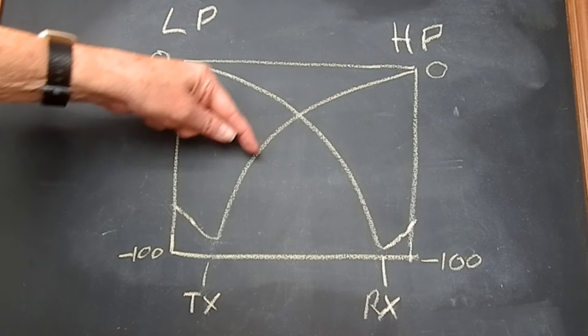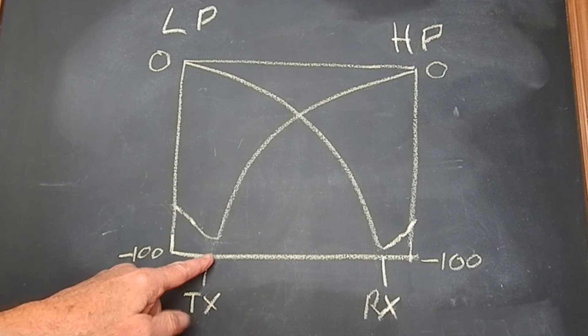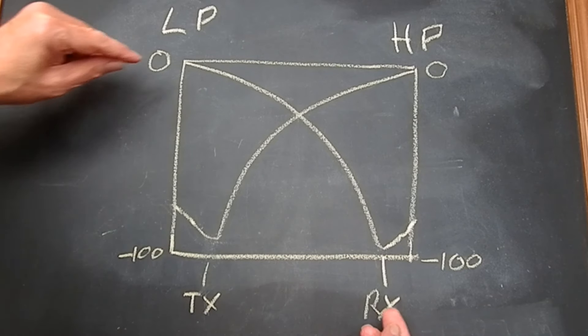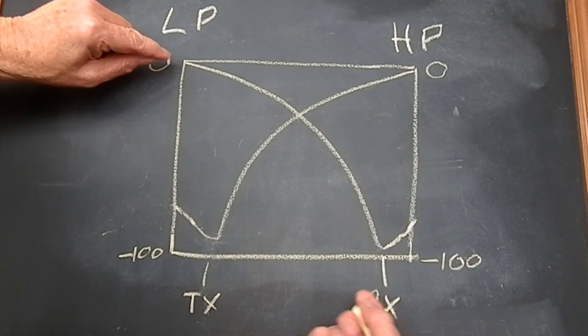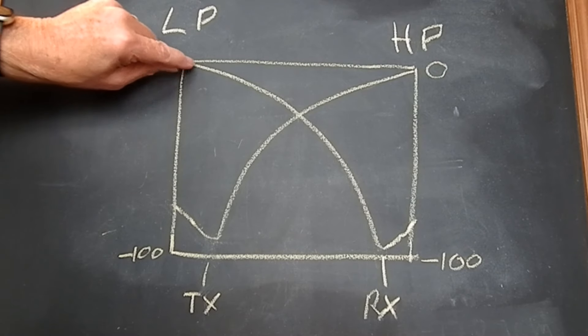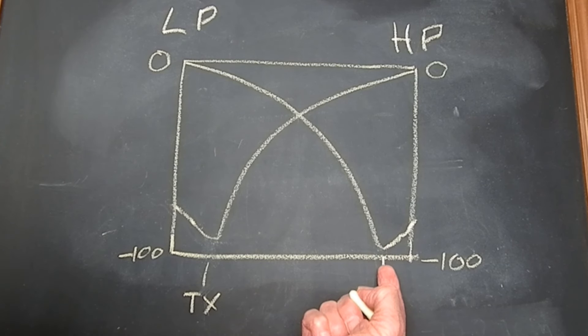What you do on the spectrum analyzer on the receive side of the duplexer here, you adjust it for maximum attenuation at the transmit frequency. Now the receiver, that's the receive frequency. The transmitter side of the duplexer, you adjust here for maximum attenuation on the receive frequency.